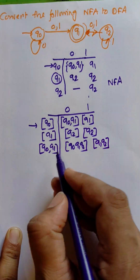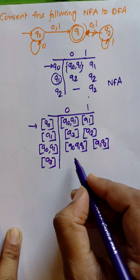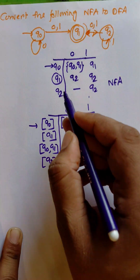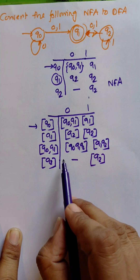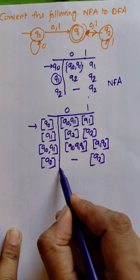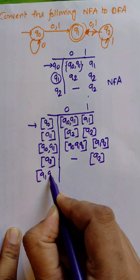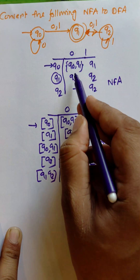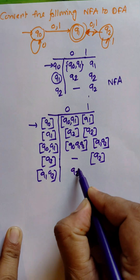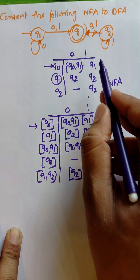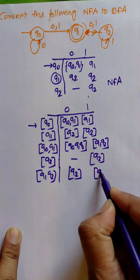Now consider q2 as the present state. For q2 to 0 is empty, and q2 to 1 is q2. Now the new states {q1, q2} and {q0, q1, q2} need to be processed. For {q1, q2}: q1 to 0 is q2 and q2 to 0 is empty, giving q2. For input 1, q1 to 1 is q2 and q2 to 1 is q2, giving q2.